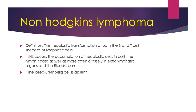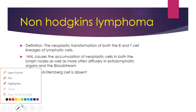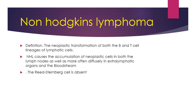In this lecture we will be talking about Non-Hodgkin's Lymphoma. Non-Hodgkin's Lymphoma is the neoplastic transformation of lymphocytes, that is both B and T cells. It causes the accumulation of neoplastic cells in both lymph nodes as well as in the extra lymphatic sites like the bloodstream, which is important and will be discussed later.